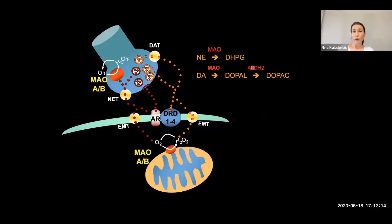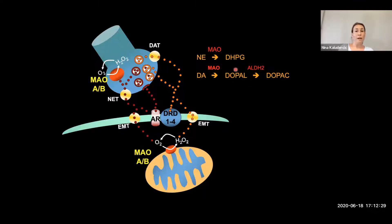The major catecholamines that are MAO substrates include norepinephrine, which following MAO-mediated degradation generates DHPG, and dopamine, which generates a very reactive and unstable aldehyde intermediate that is immediately converted into the corresponding acid by aldehyde dehydrogenase 2. Considering that catecholamine spillover is one of the major hallmarks of heart failure in humans, the first question we asked was whether monoamine oxidase could play a role in heart failure.